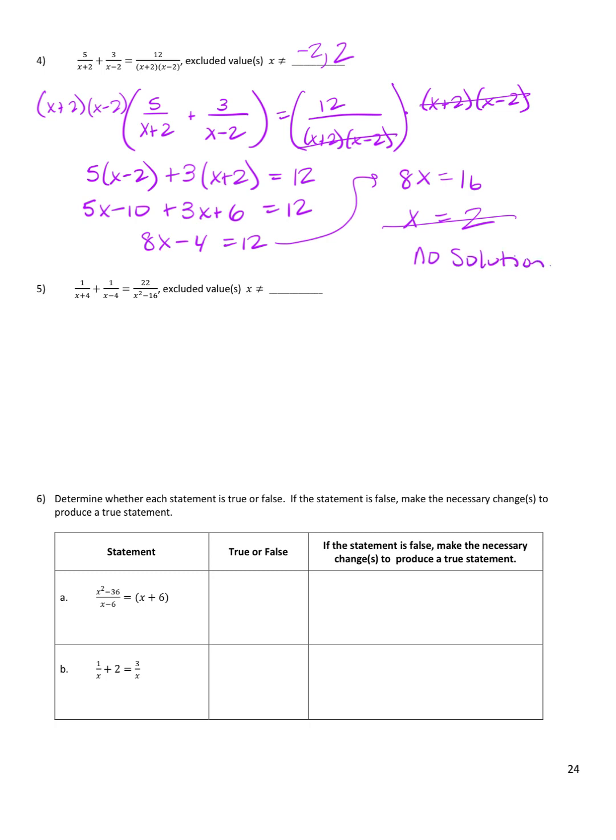So that's two in a row with no solution — I promise that's not always what happens. For number 5, my excluded values are going to be 4 and negative 4, by looking at the denominators. My common denominator is x plus 4 times x minus 4, because when you multiply those together you get x squared minus 16.